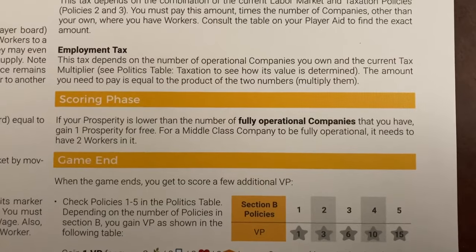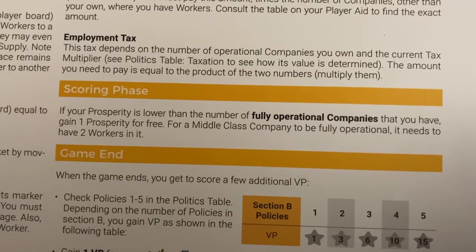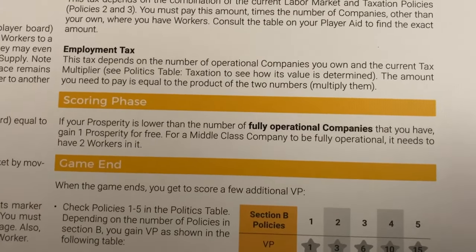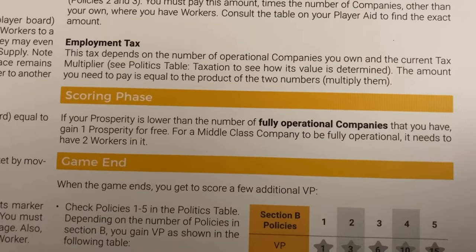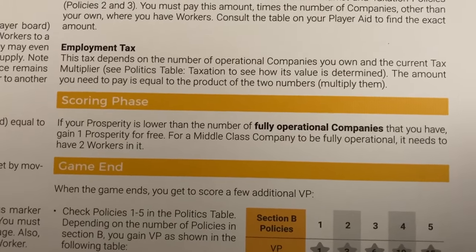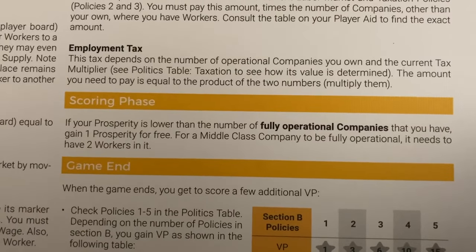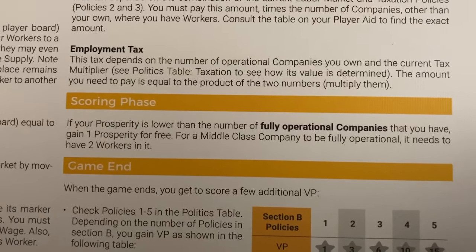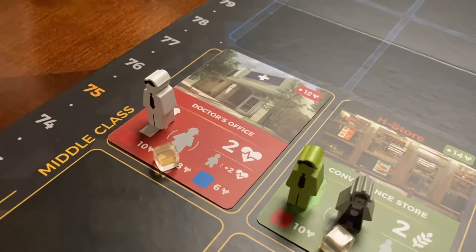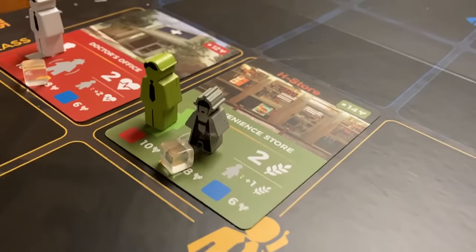During the scoring phase you don't get direct victory points, but if your prosperity is lower than the number of fully operational companies you can increase prosperity by one. This motivates increasing companies and raising prosperity for more victory points. A caveat: a company must have both workers — including the working class worker — to be fully operational. So the doctor's office with only one worker is not fully operational, but the convenience store with both workers would be.